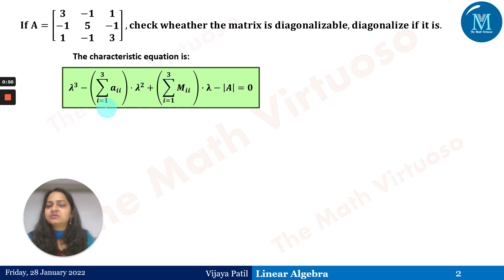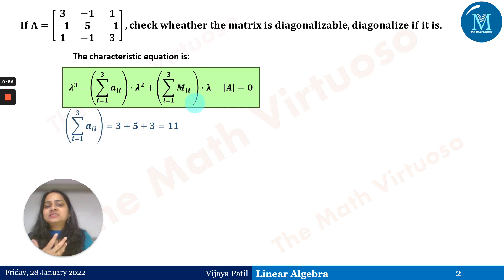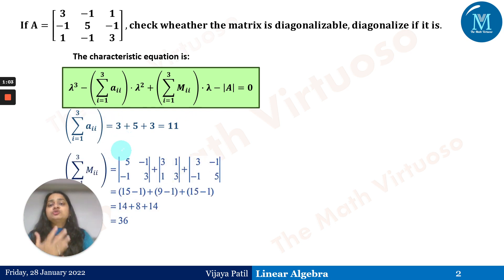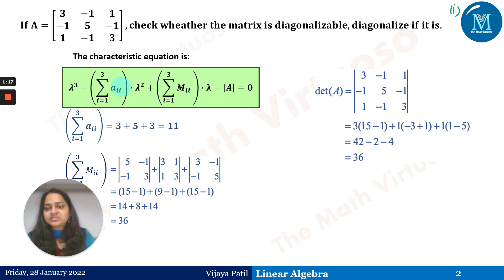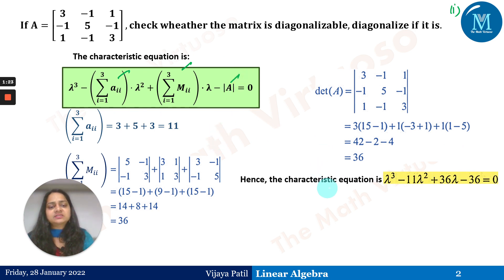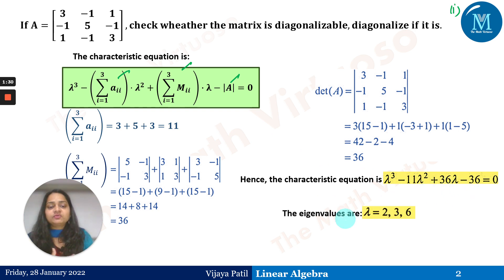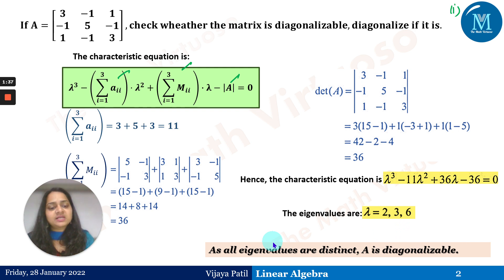Since it's a 3×3 matrix, the characteristic equation is given as: λ³ − (Σaᵢᵢ)λ² + (ΣMᵢᵢ)λ − det(A) = 0. We find Σaᵢᵢ, ΣMᵢᵢ, and the determinant of A, then substitute to get the characteristic equation as λ³ − 11λ² + 36λ − 36 = 0. Therefore the eigenvalues are λ = 2, 3, 6.